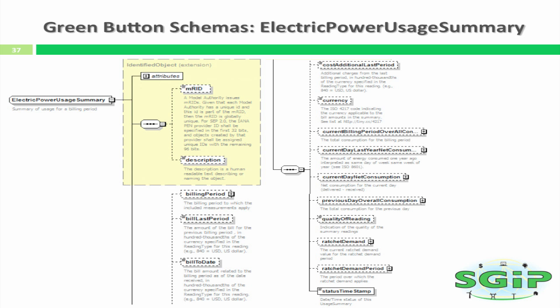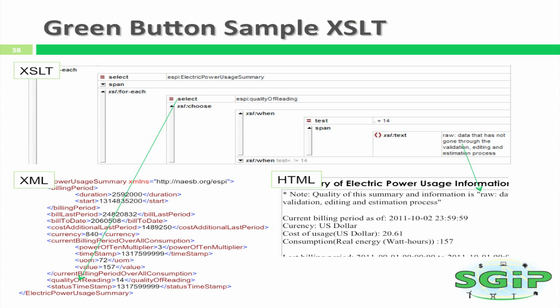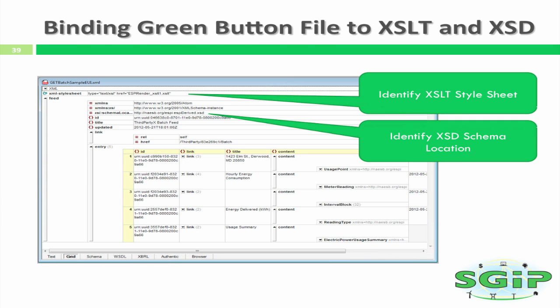Here we're drilling into the electric power usage summary in order to see all the different types of summary information that might be of value to a consumer in the GreenButton format. Here we get into the details of a sample XSLT, which shows how the information is pointed to from the file to allow its display in an HTML file that the consumer can read. There is a style sheet at the top of the file that identifies the source for the XSLT, and there's also a line that shows the XSD schema location.